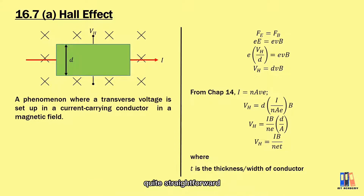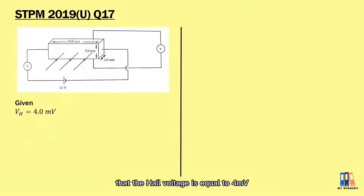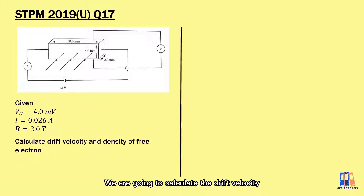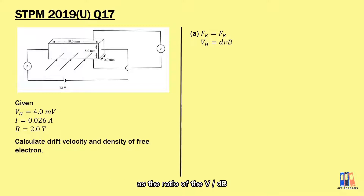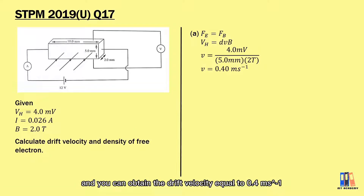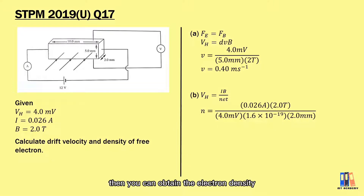The derivation and formula are quite straightforward. Let's try a question from the 2019 past year paper. You are given: Hall voltage V_H = 4 mV, current I = 0.026 A, and magnetic field strength B = 2 T. We need to calculate the drift velocity and the density of free electrons. Starting from electrostatic force equals magnetic force, we obtain V_H = dVB, so drift velocity equals V_H divided by dB, giving 0.4 metres per second. To calculate the electron density, using V_H = IB over (net), the electron density equals IB divided by (V_H × e × t), which gives 4.06 × 10²² per metre cubed.